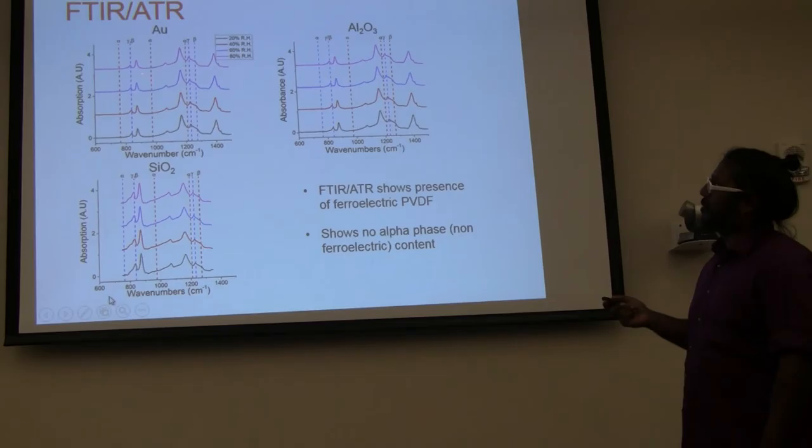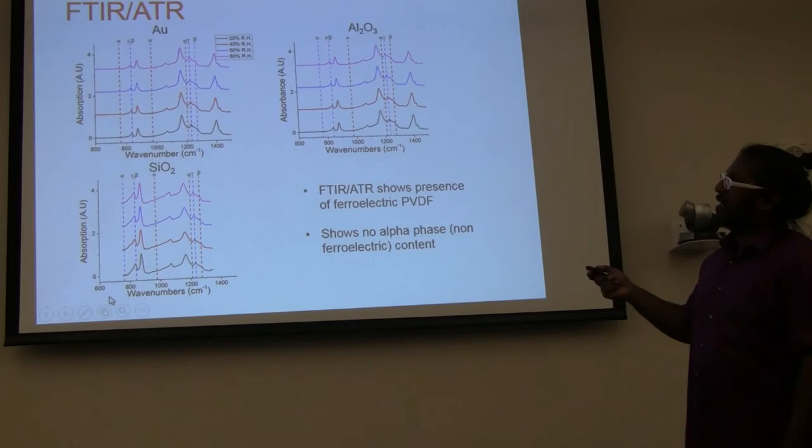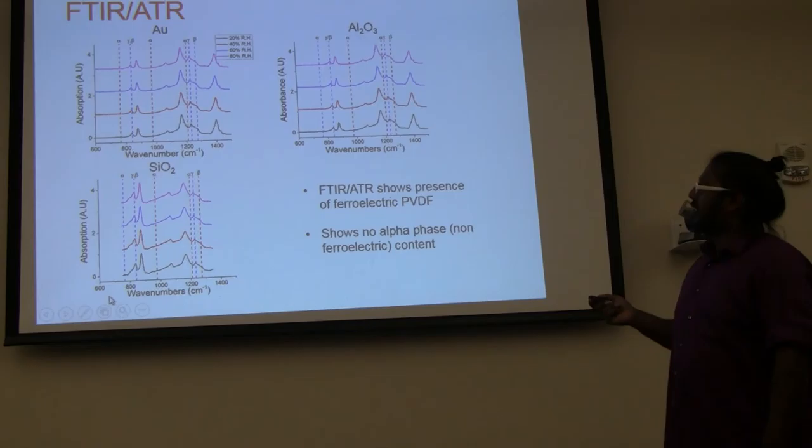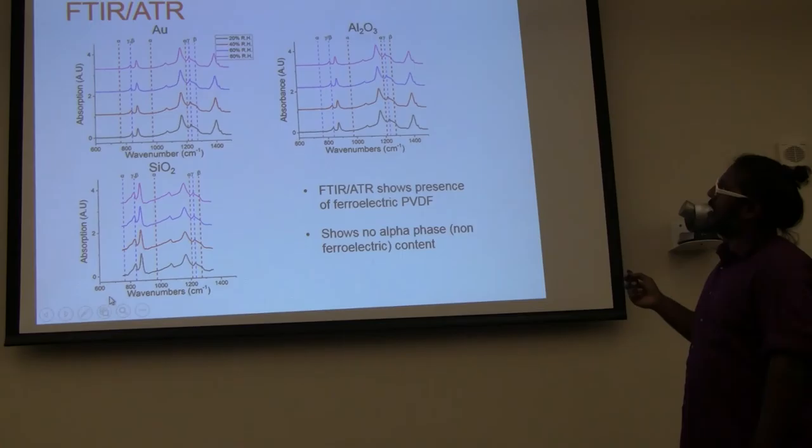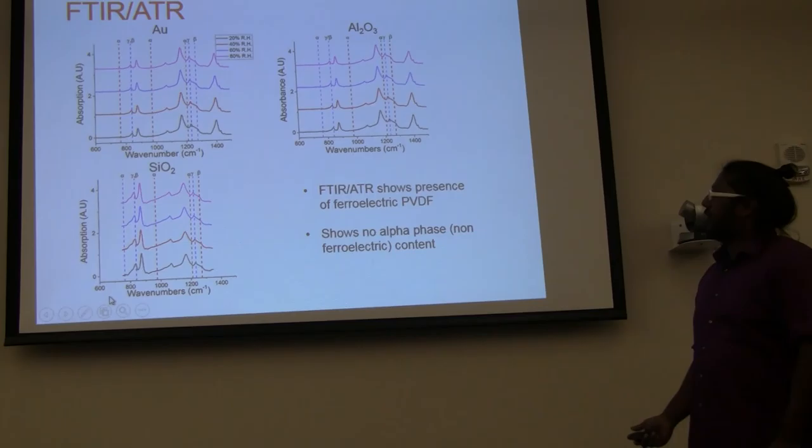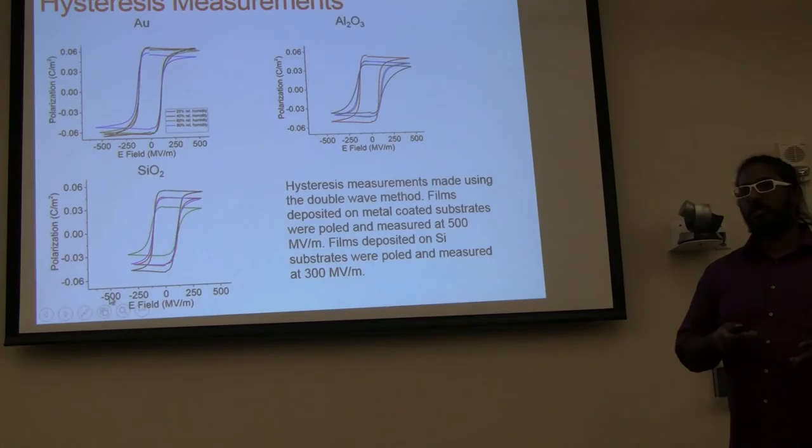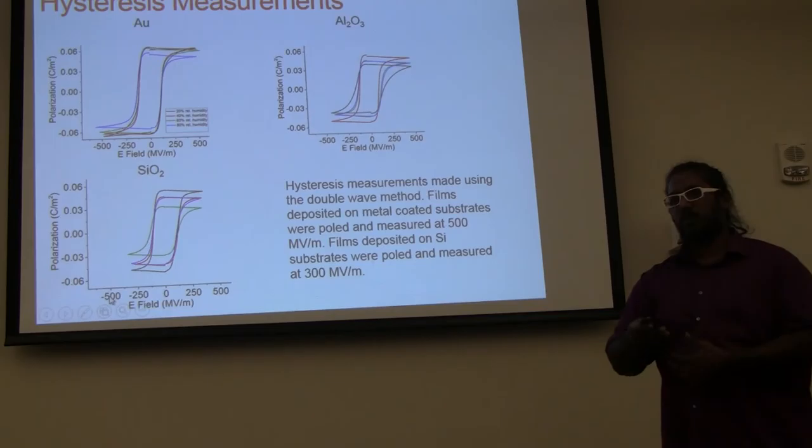And then we want to check to make sure it's in the ferroelectric phase. One way we do that is by monitoring the molecular vibrations. We can do that using infrared light. So if we plot the absorptions of infrared light, the blue is ferroelectric and the red is non-ferroelectric. We can see that on all substrates, we actually only see absorptions in the ferroelectric phases, which means that these films are probably going to be good electrically.